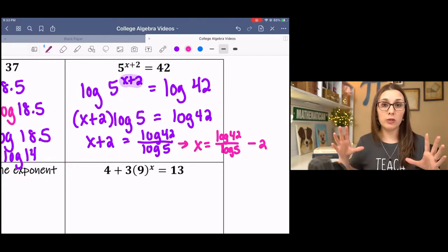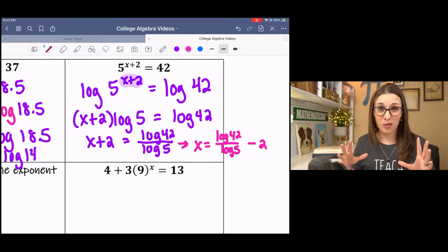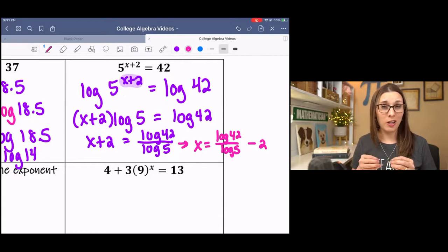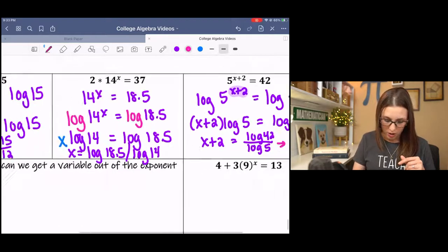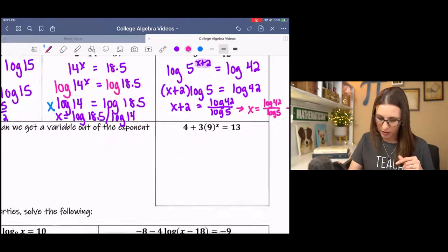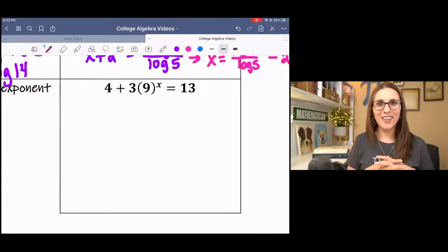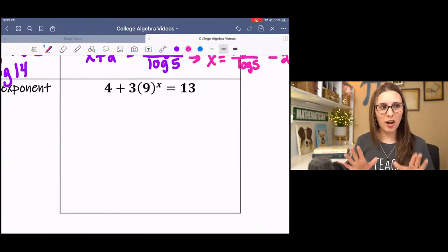You might even do it in two different steps because you don't want to type it in wrong. If your calculator thinks that the minus 2 is part of the denominator, then you're going to get the wrong answer. So just be very careful with that. Next one is down here. Ooh, this is fun. I want you to pause it and try it on your own. See if you can get it and then come back.